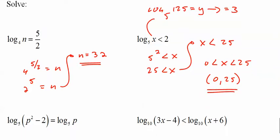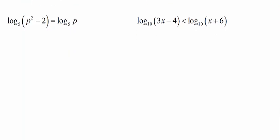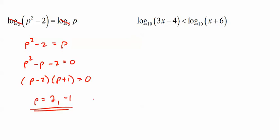Two log base 5s. Get rid of them. What's left over? p squared minus 2 equals p. p squared minus p minus 2 equals 0. p minus 2. p minus 1. Plus 1. Good. p equals 2 or negative 1. Extraneous. Can't have a negative inside a log. Like the domain I showed you earlier.